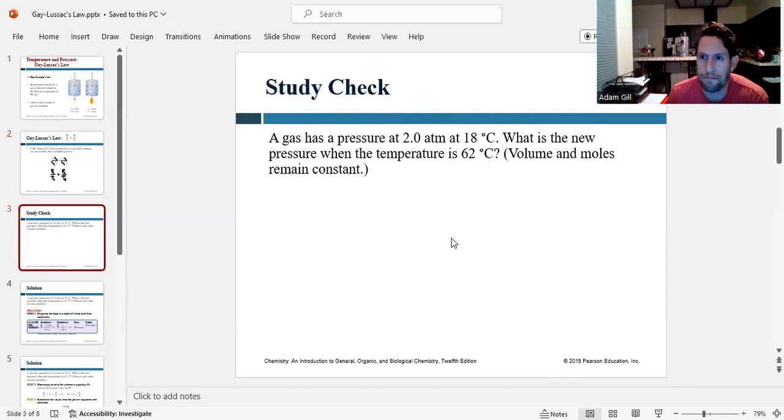Let's do a practice problem. A gas has a pressure at two atmospheres at 18 degrees Celsius. What is the new pressure when the temperature is 62 degrees Celsius? Volume and moles remain constant. So because volume and moles are constant, we can use Gay-Lussac's Law.